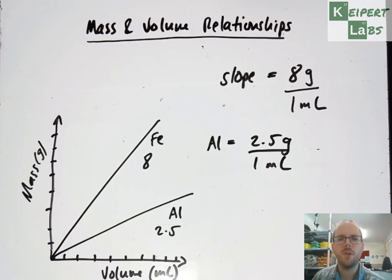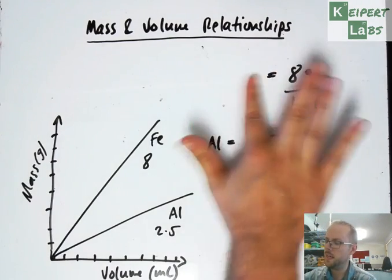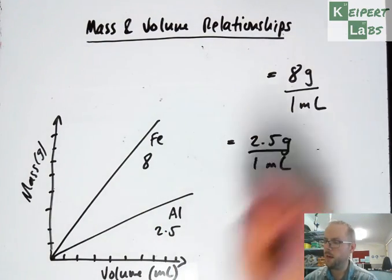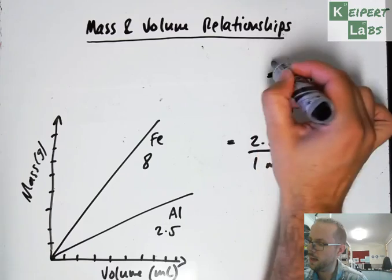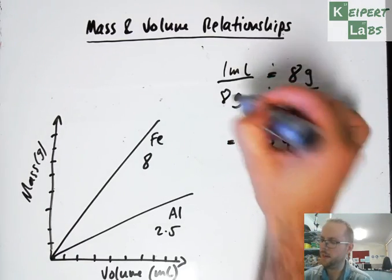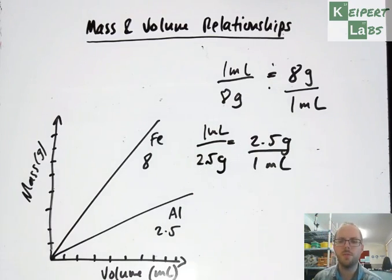Likewise, I could look at these relationships, if I just take out the fact that it's a slope of a line, I could actually flip them around. So I could say that for every 1 milliliter of iron I will have 8 grams. For every 1 milliliter of aluminum I will have 2.5 grams.